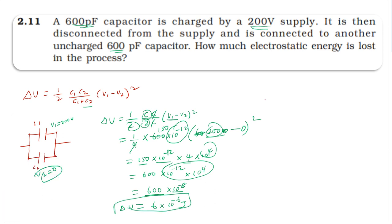Now the direct method. Initial energy U equals half into C into V squared. Substituting: half into 600 into 10 power minus 12 picofarad, into potential 200 whole square, which equals 300 into 10 power minus 12 into 200 whole square, equals 300 into 10 power minus 12 into 4 into 10 power 4.